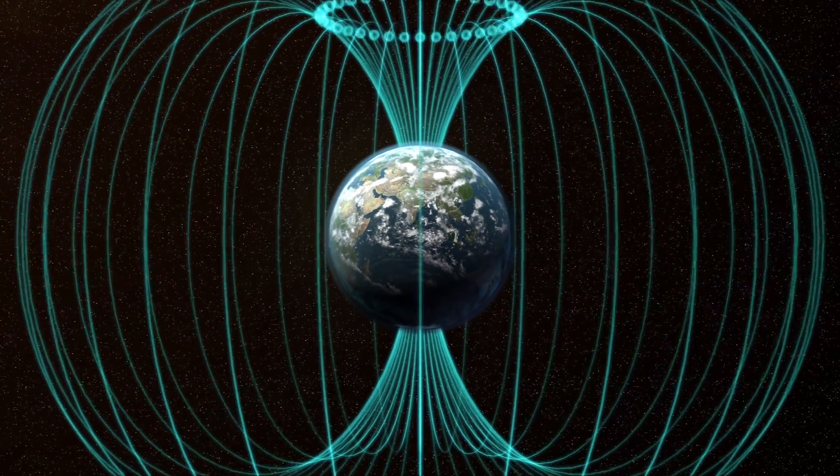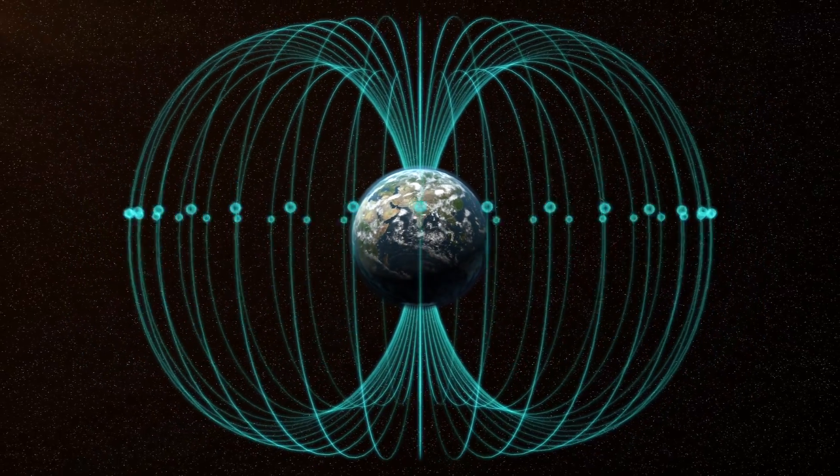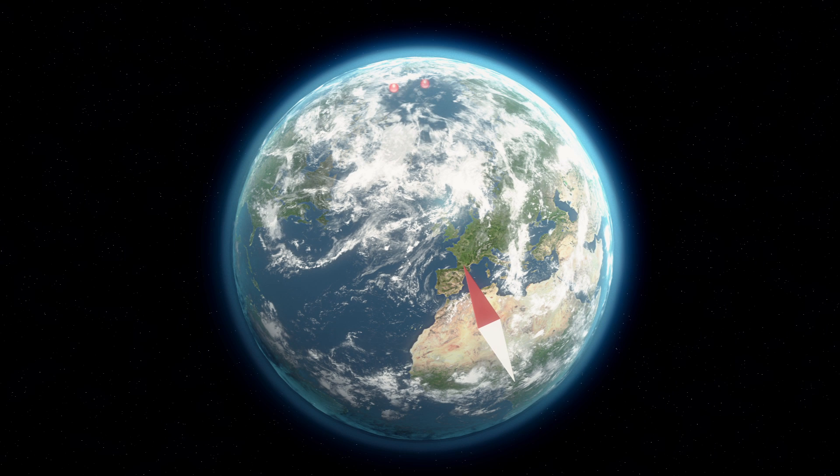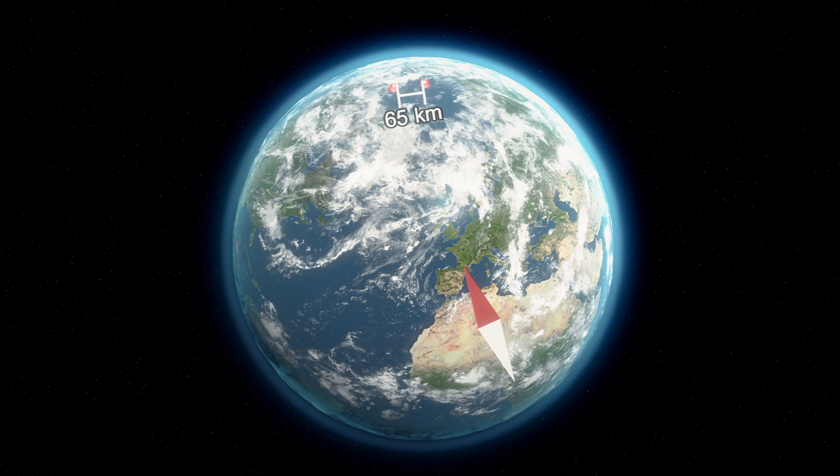The Earth's magnetic field has lost about 15% of its strength over the past 150 years. The magnetic north pole was moving at about 10 kilometers a year before 1994, but the rate has increased to around 65 kilometers a year since 2001.